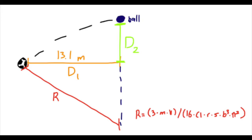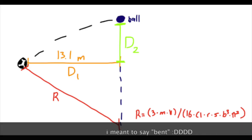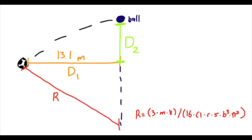First, you'll see D1, which is the distance the ball traveled forward, in this case 13.1 meters. And our main goal is to find D2, which is the amount the ball bended per se. And to do that, we need to find R, the red line, which is the curvature radius.